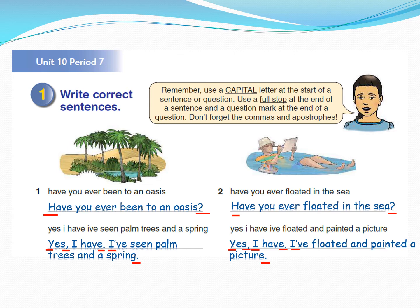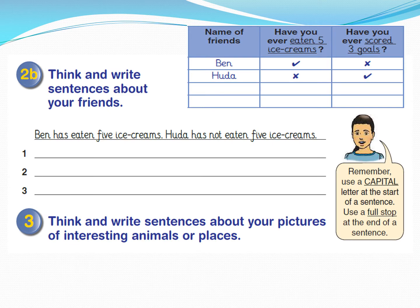Let's move to the second activity: think and write sentences about your friends. We have a table here with names of friends — Ben and Hoda — and we will add two of our own friends' names. Let's do the model: 'Ben has eaten five ice creams. Hoda hasn't eaten five ice creams.' These are answers for the question 'Have you ever eaten five ice creams?' Ben has a tick, so Ben has eaten five ice creams. Hoda has a cross, so Hoda hasn't eaten five ice creams.